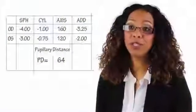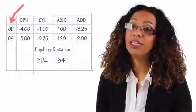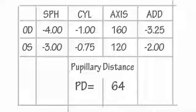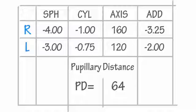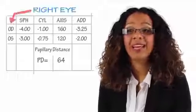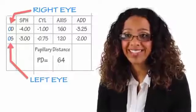The most common terms you'll encounter are OD and OS. OD stands for right eye and OS stands for left eye. But sometimes prescriptions will just have an R and an L, which we all find easier to understand. So remember, OD means right eye and OS means left eye.